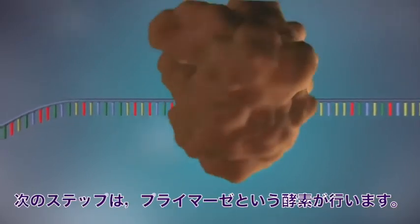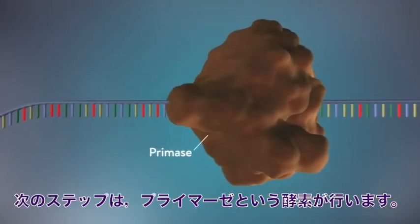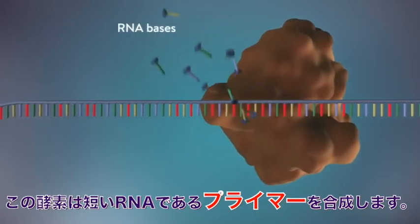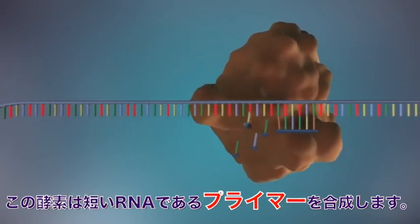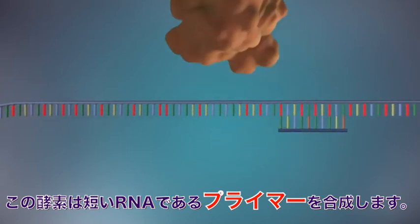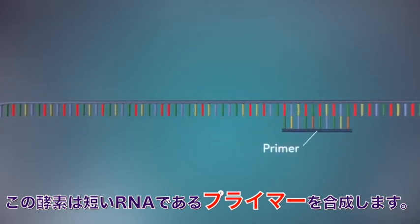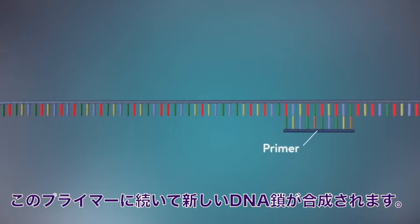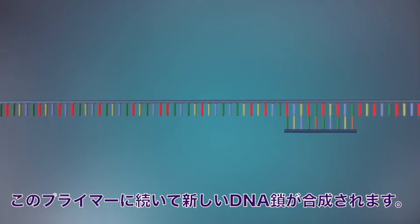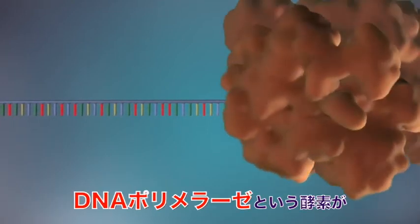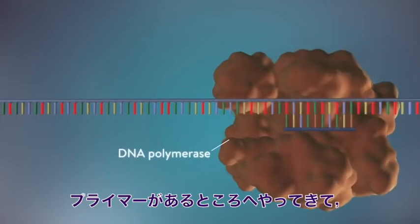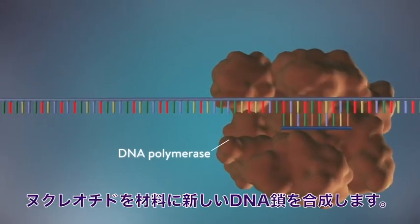An enzyme called primase starts the process. This enzyme makes a small piece of RNA called a primer. This marks the starting point for the construction of the new strand of DNA. An enzyme called DNA polymerase binds to the primer and will make the new strand of DNA.